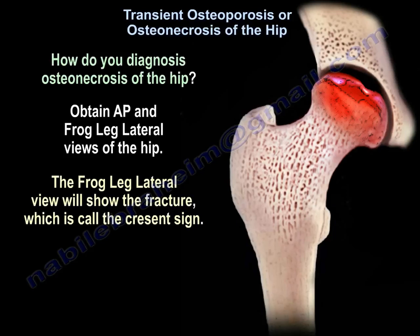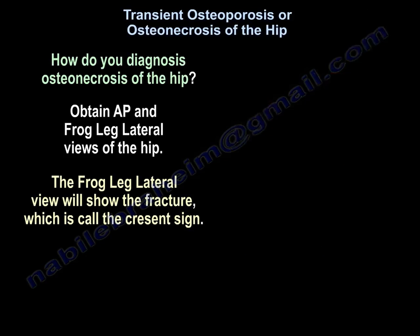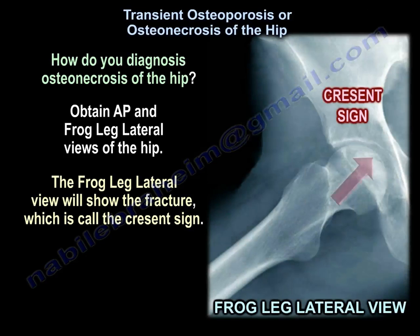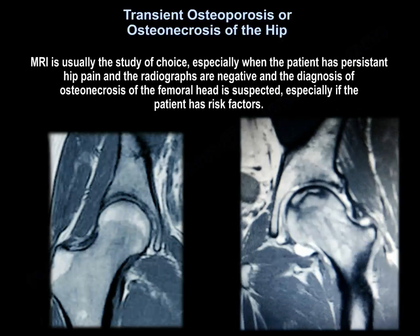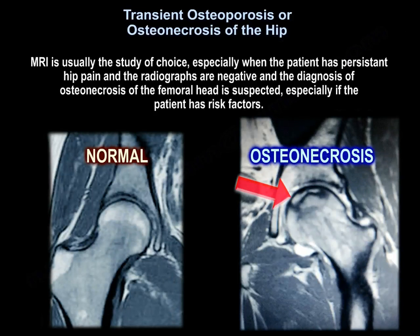How do you diagnose osteonecrosis of the hip? Obtain AP and frog lateral views of the hip. The frog lateral view will show the fracture, which is called the crescent sign. MRI is usually the study of choice, especially when the patient has resistant hip pain and the radiographs are negative, and the diagnosis of osteonecrosis of the femoral head is suspected, especially if the patient has risk factors.